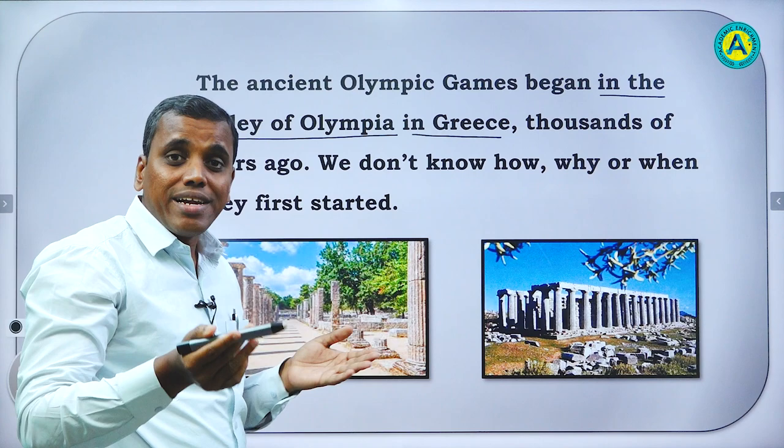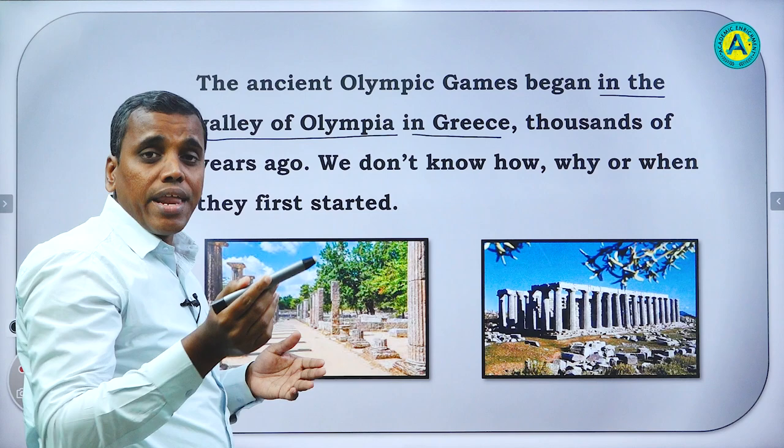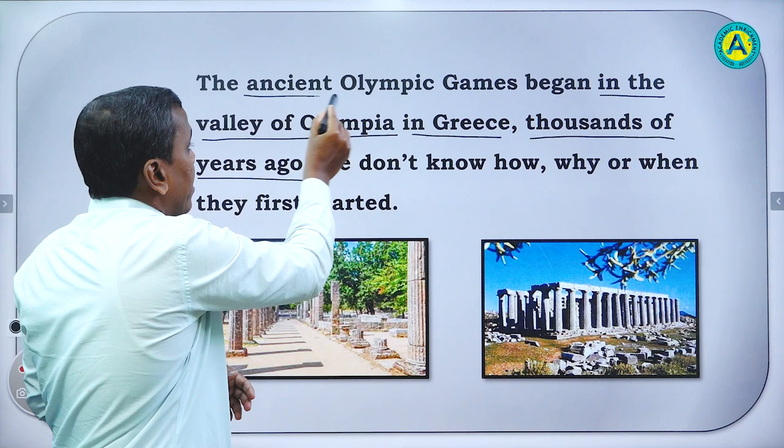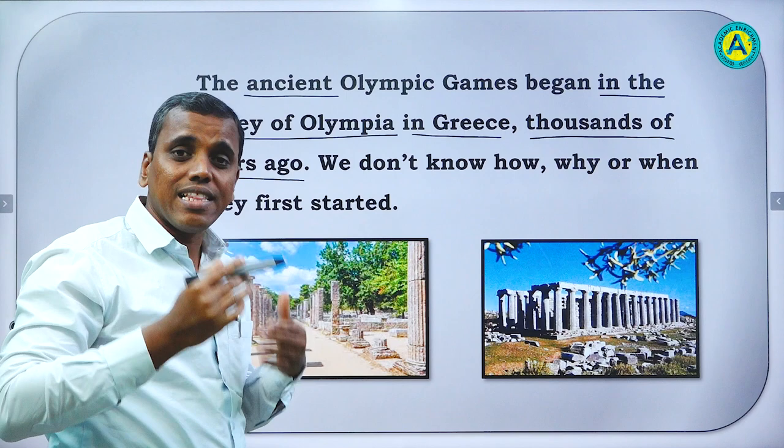So where did it begin? In the valley of Olympia in Greece. When? Thousands of years ago. In the beginning it is also given — 'ancient'. Ancient means very old, thousands of years ago, that happened in the old, in the past.